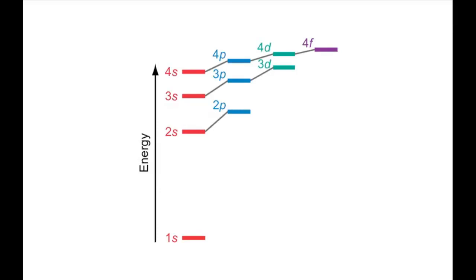As you can see, for a multi-electron atom, the 1s orbital is filled first, then the 2s, then the 2p, then the 3s, the 3p, the 4s, the 3d, and the 4p.